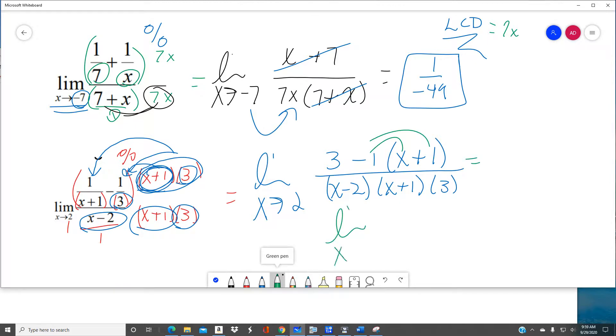Distributing here. I'm taking the limit as X goes to 2. When I distribute, of course, I get 3 minus X minus 1. So in that numerator, I get 2 minus X. And the denominator have X minus 2, X plus 1, and a 3.